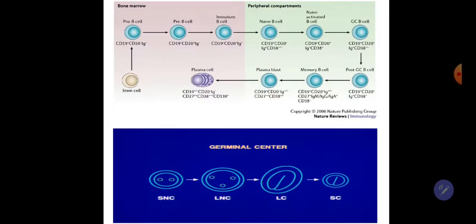Maturation sequence. The maturation sequence begins in the bone marrow as a stem cell and ends as a plasma cell. Stem cells become pro-B cells, pre-B cells, then immature B cells. When the cell leaves the bone marrow and enters the peripheral compartment, it becomes a naive B cell present in the primary follicle. Once activated, it becomes a naive activated B cell, germinal center B cell, post-germinal center B cell, memory B cell, plasmablast, and lastly plasma cell.